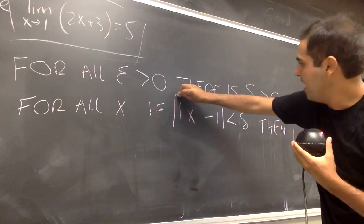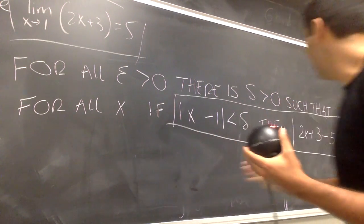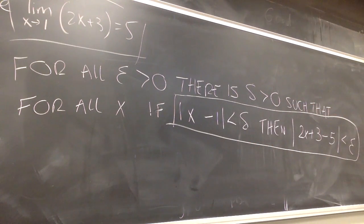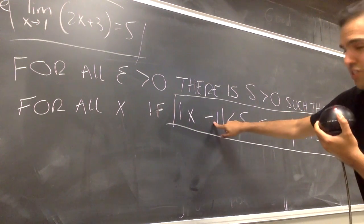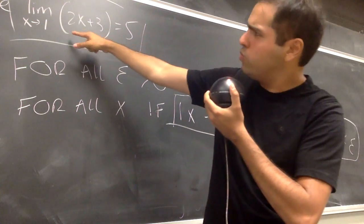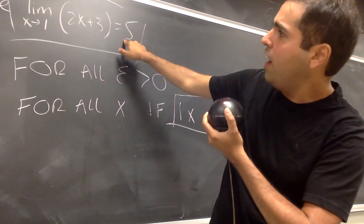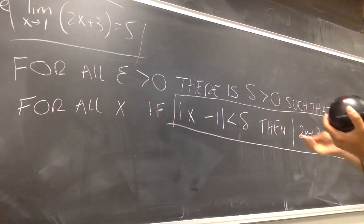If absolute value of x minus 1 is less than Delta, then absolute value of 2x plus 3 minus 5 is less than Epsilon. What does that really mean? Think of Delta and Epsilon as being very small. It means really that if x is very close to 1, then 2x plus 3 is very close to 5. And notice, this is just what we want. Limit x close to 1 of 2x plus 3 equals to 5 means that if x is close to 1, then 2x plus 3 is close to 5.